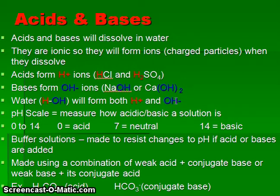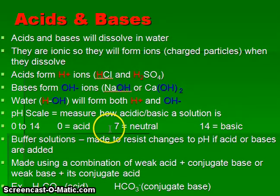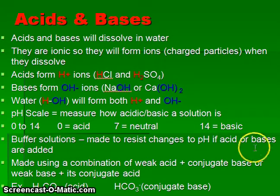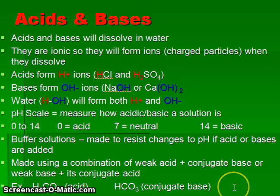The pH scale is used to measure acids and bases, ranging from 0 to 14. Values from 0 up to just below 7 are acidic, 7 is neutral, and above 7 up to 14 is basic. Buffer solutions are very important in biology — they resist changes to pH and are made using a combination of a weak acid and its conjugate base, or a weak base and its conjugate acid.